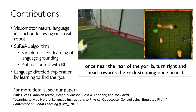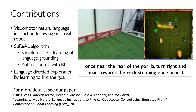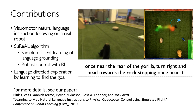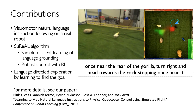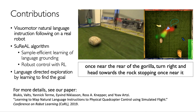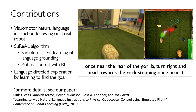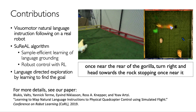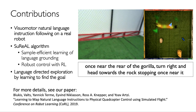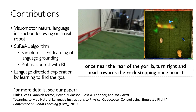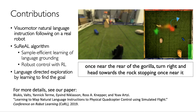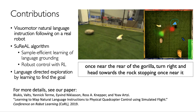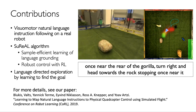In summary, we present the first method for following natural language instructions on a real robot from first-person observations without manually designed symbolic representations. We introduce SURREAL, a novel joint simulation-and-real learning algorithm, and a method for language-directed exploration. Thank you. For further details, please refer to our paper.